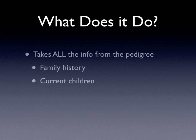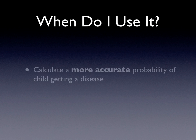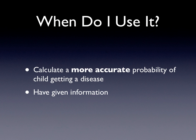What does it do? Basically, Bayes Theorem takes in all the information from the pedigree — the family history, the current children — takes all that information, wraps it up, and gives you more accurate probability. So you can determine, usually, carrier status is what you're looking for. When do you use it? Well, when you want more accurate probability and when you have that information.